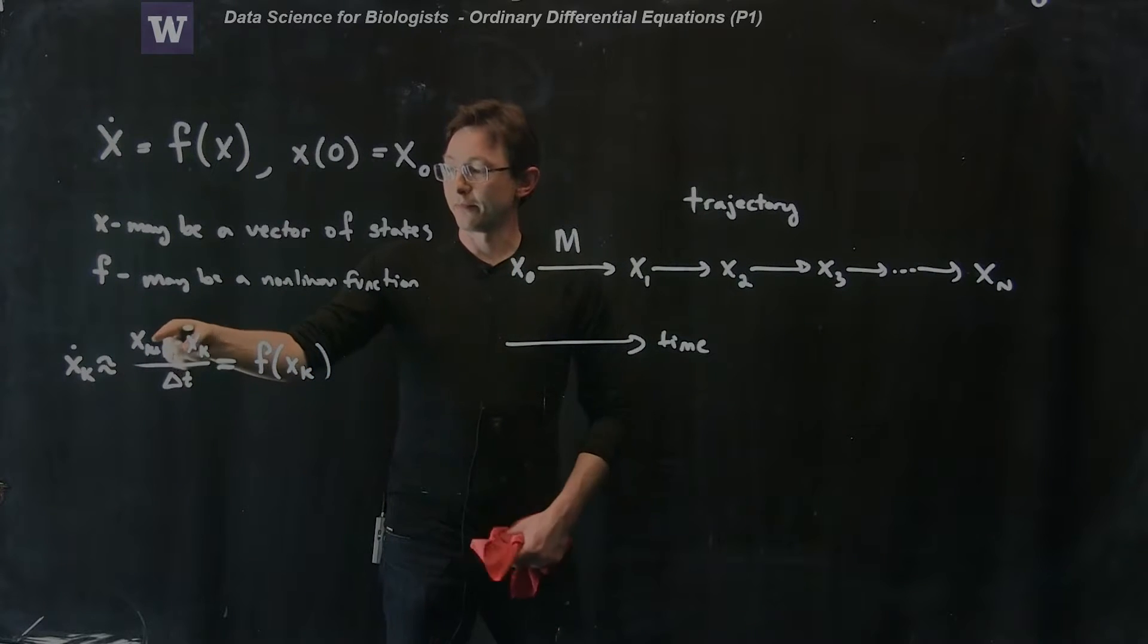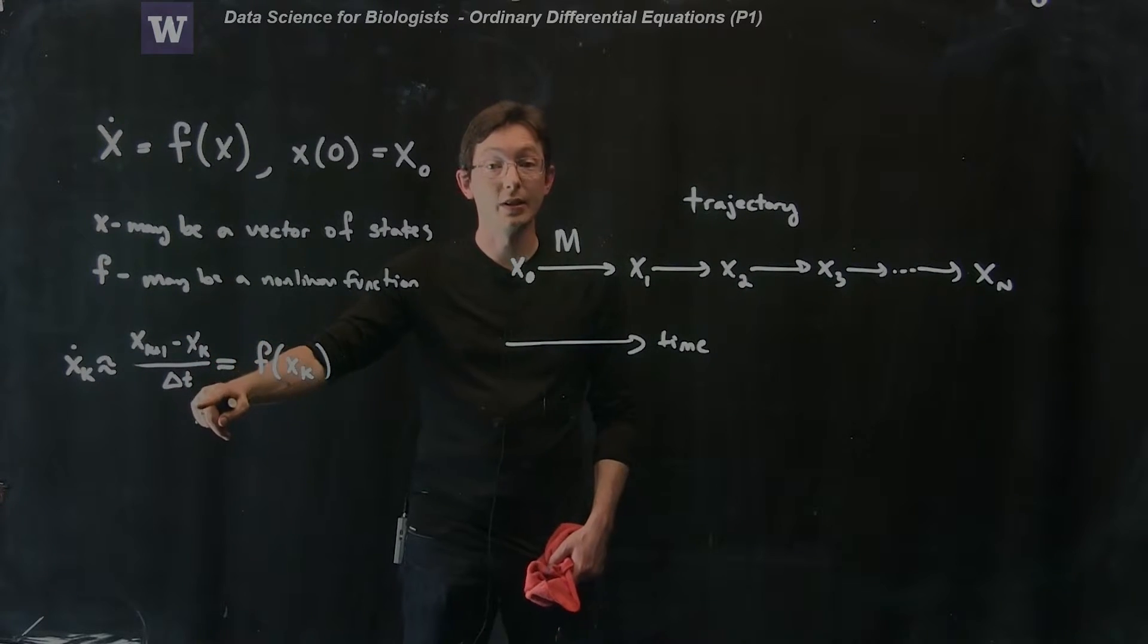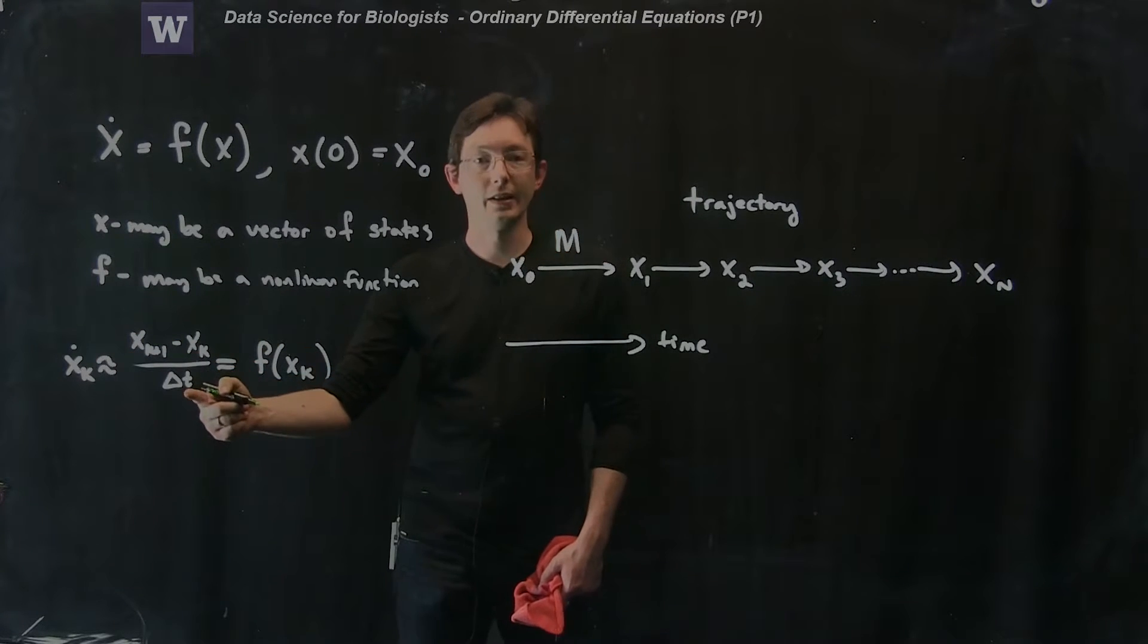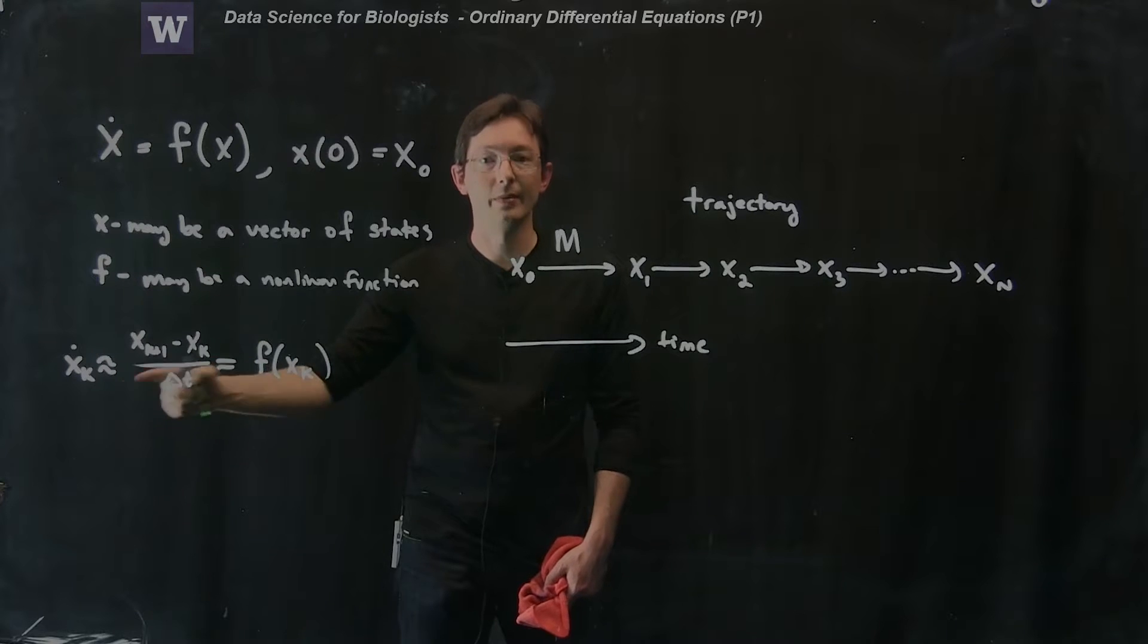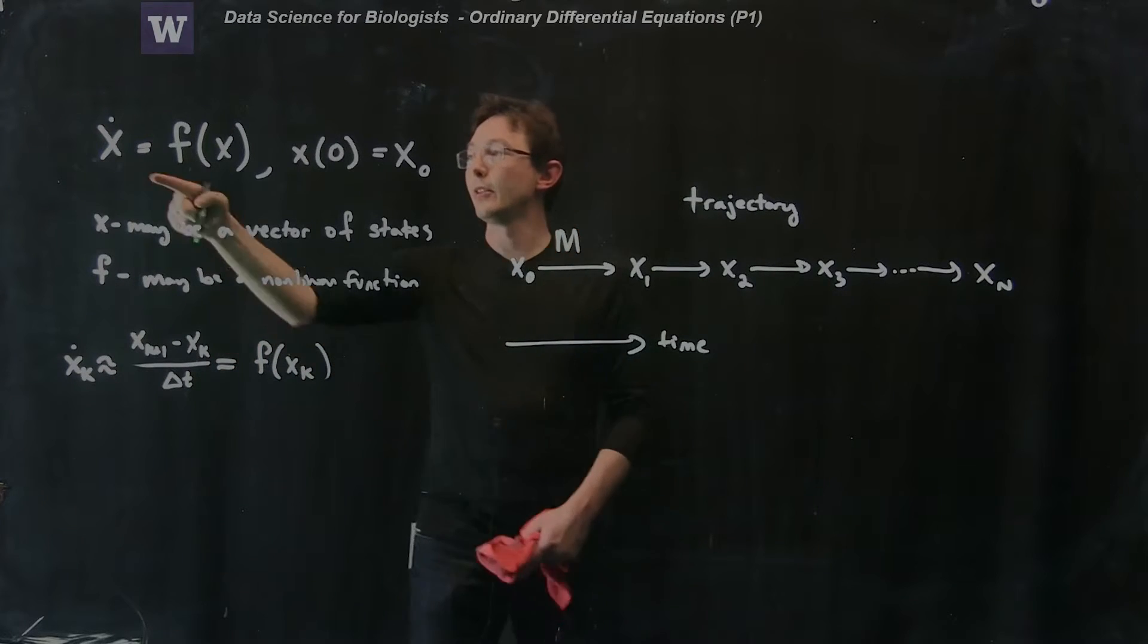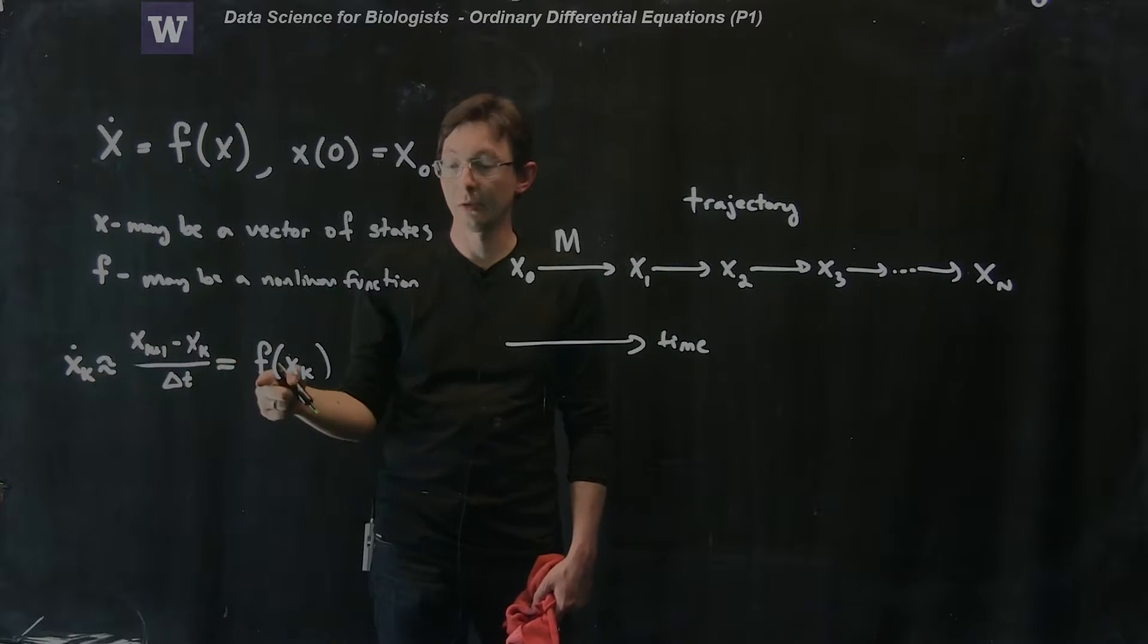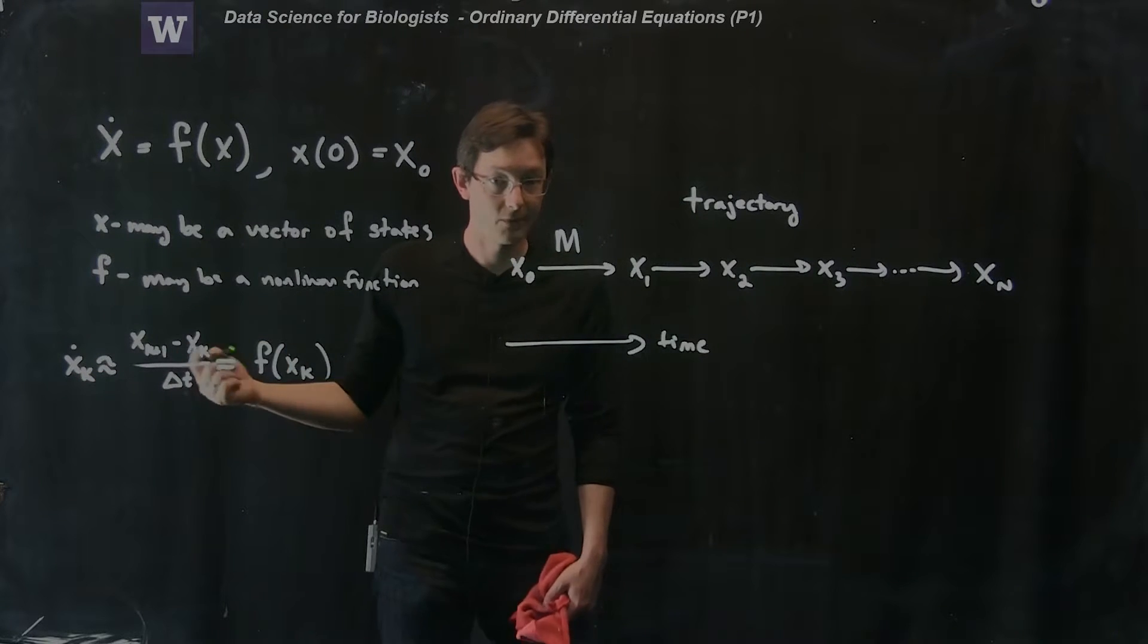So we're looking at if we took the limit as delta t went to zero this would be exactly my derivative, but we're going to use a finite delta t and this is approximately my derivative x dot. And we know that x dot should equal f of x, so x dot at time k should equal f of x at time k.